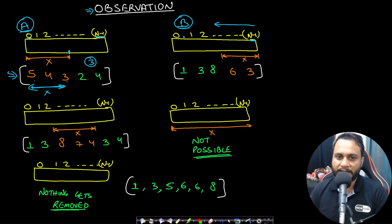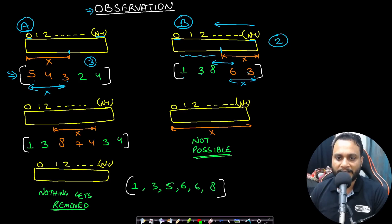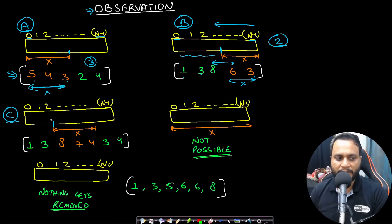In case B, we already know the entire array won't be removed, so at least index 0 remains. For example, with '1 3 8 6 3', removing '6 3' gives the largest non-decreasing array, so the answer is 2. You could also remove '8 6' and still get '1 3 3', which is also non-decreasing — both give length 2, so we return 2.